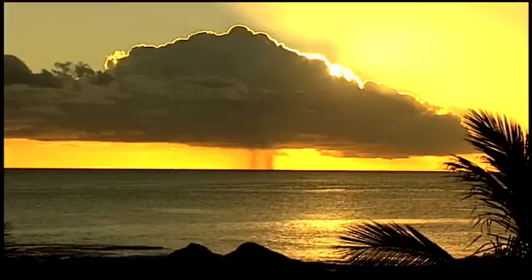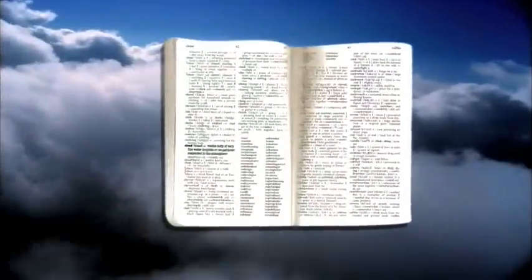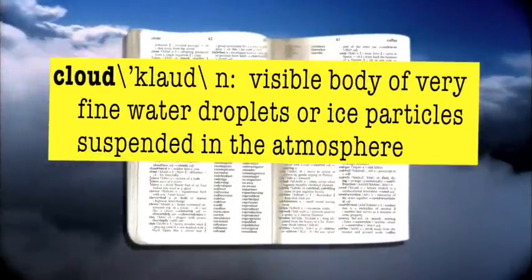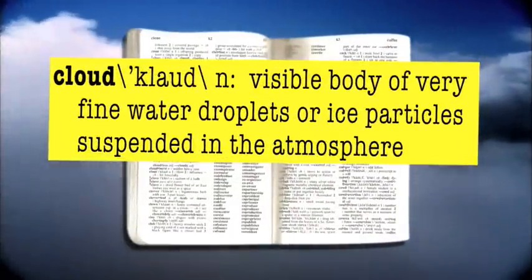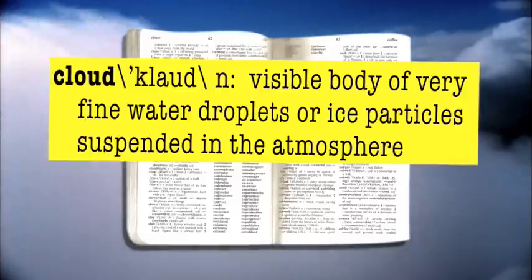We take them for granted because they are such a constant part of what we see every day. The dictionary defines clouds as a visible body of very fine water droplets or ice particles suspended in the atmosphere. But maybe instead of reading about it in a dictionary, it might be easier to show you what a cloud is.